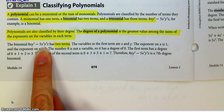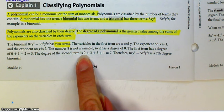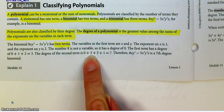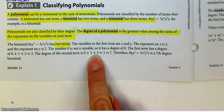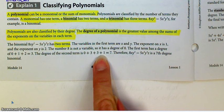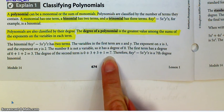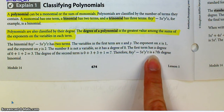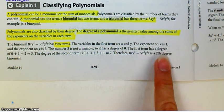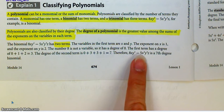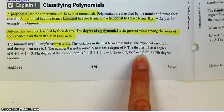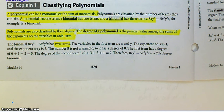Looking at the second term: the 5's degree is 0, x is raised to the third so its degree is 3, y is raised to the third so it's 3, and z is raised to the first — remember, if you have a variable with no exponent shown, it's raised to the first power. Add all of that together and the degree of the second term is 7. Therefore, 8xy² minus 5x³y³z is a 7th degree binomial, because 7 is the highest degree of any term in the polynomial.